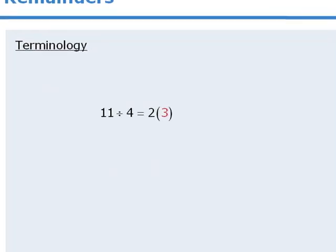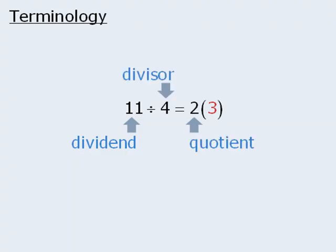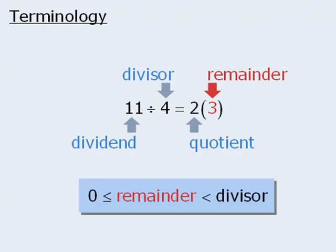Now let's examine some terminology. Here we have 11 divided by 4 equals 2 with remainder 3. The 11 here is called the dividend. 4 is called the divisor. 2 is the quotient. And 3 is the remainder. Now an important feature about remainders is that they are always greater than or equal to 0 and less than the divisor.